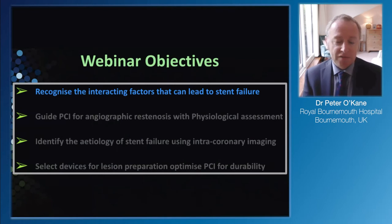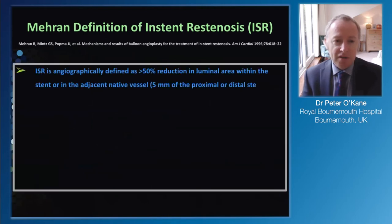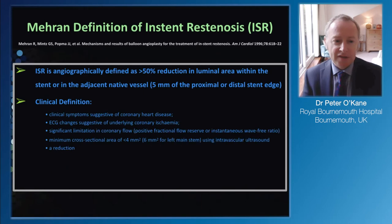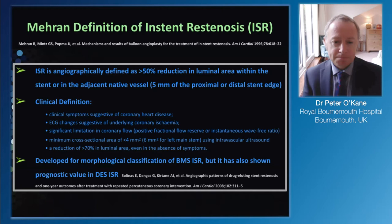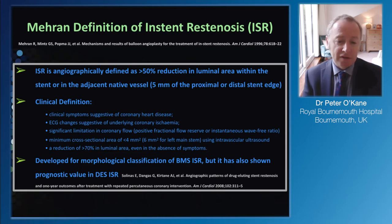Talking about the factors that lead to stent failure - first the definition. Roxana Moran defined in-stent restenosis back in 1996 as a 50% reduction in luminal area within the stent or the native vessel. It also includes in-segment restenosis 5mm proximal or distal to the stent edge. It's associated with a clinical definition - symptoms, positive physiology, positive reduction in MLA with either angiographic stenosis more than 70% or luminal area less than 4 or 6 depending on vessel proximity using intravascular imaging.